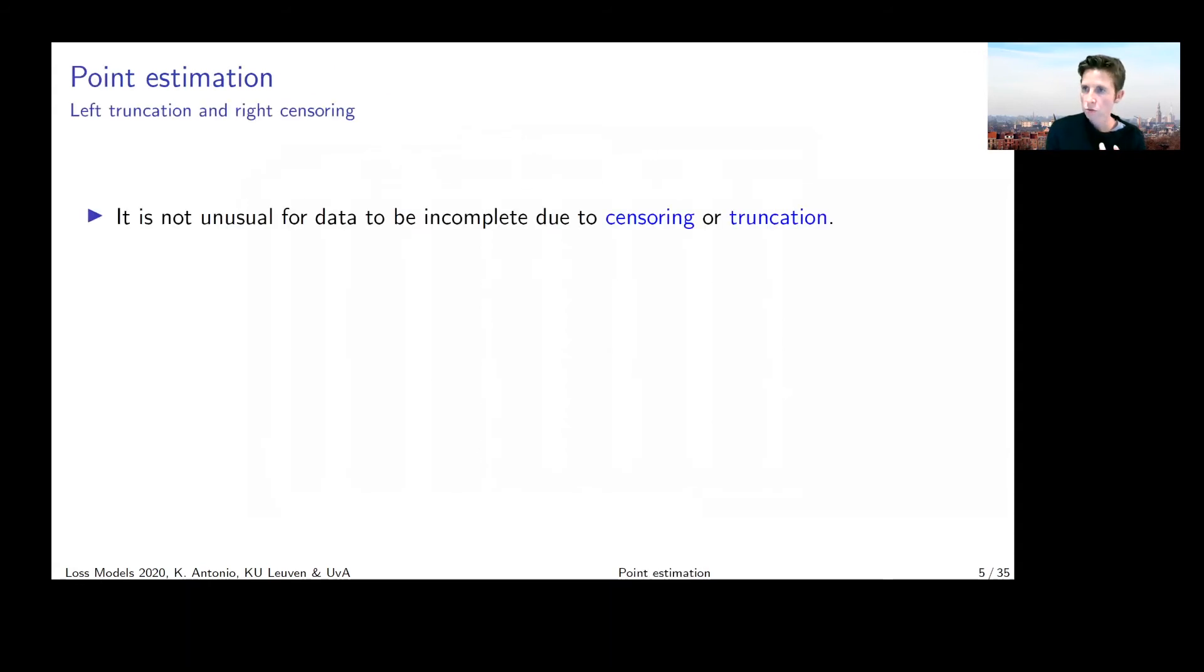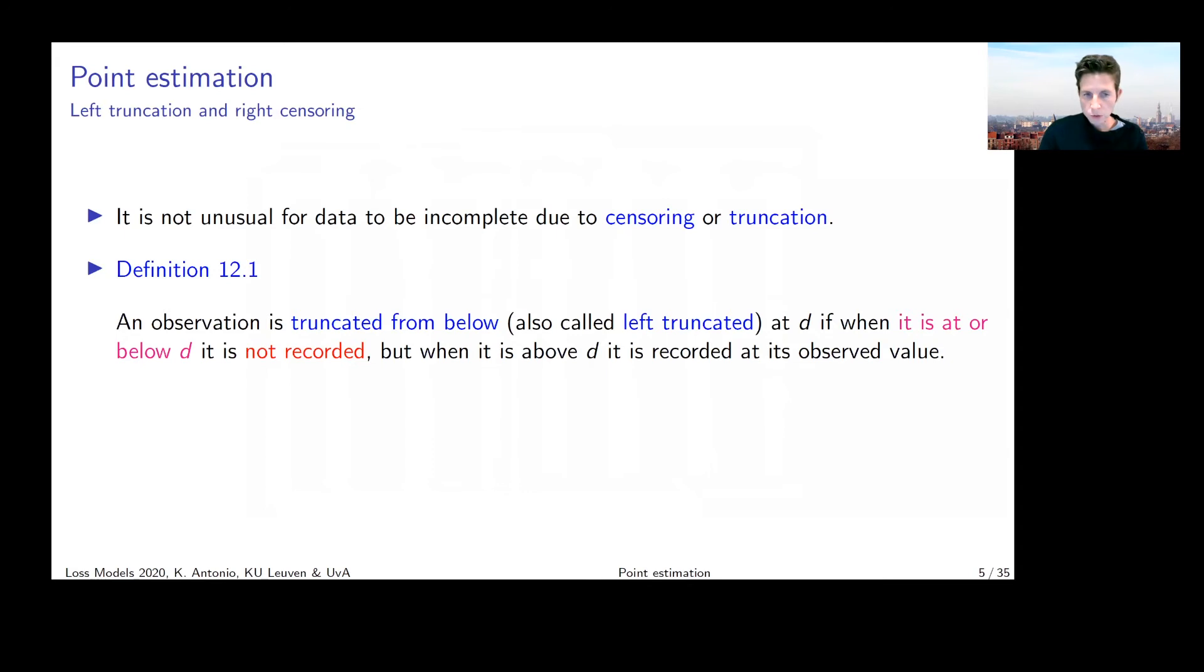Recap on censoring and truncation. It's not unusual for data to be incomplete because of censoring or truncation. Truncation from below, also denoted as left truncation at value D, means when your observation is at or below D, it's not recorded in the data set. But when it is above D, it is recorded at its observed value. A typical example of left truncation in insurance context would be a deductible. You don't see the loss unless it exceeds a certain deductible or own risk threshold.